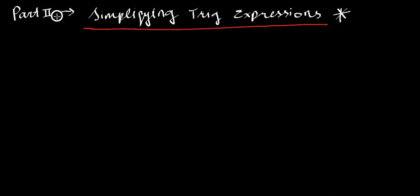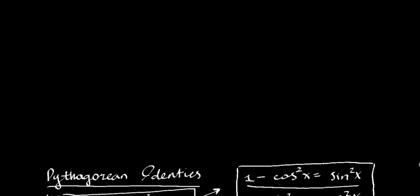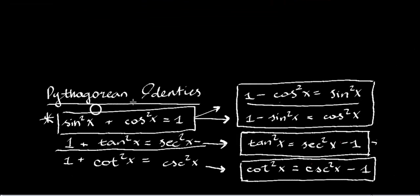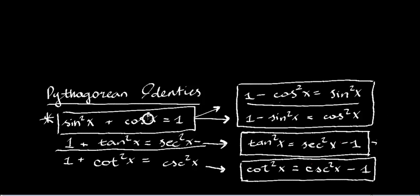Hi everyone, this is my Part 2 video on simplifying trig expressions with trig identities. I hope you watched my last video where I talked about the Pythagorean identities — sin²x + cos²x = 1 — and the fact that the other ones come from this main one. I did a proof in that video if you're interested. These two also are very significant, but they all come from this one.